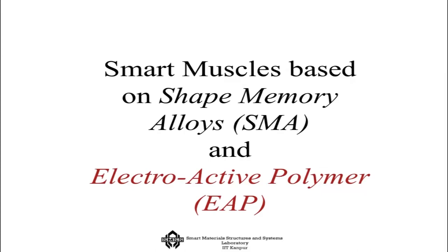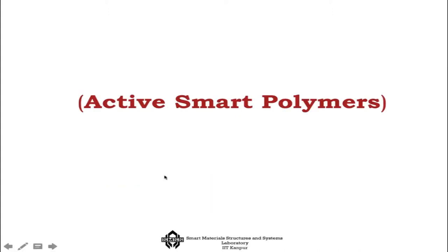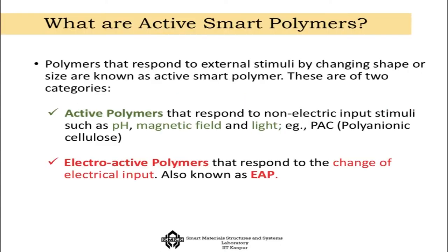Today we will talk about electroactive polymers, also abbreviated as EAP. These electroactive polymers belong to the smart materials group commonly known as active smart polymers. The polymers that respond to external stimuli by changing their shape or size are known as active smart polymers. The external stimuli could be of different types — the best way to differentiate them is whether the stimulus is electrical or non-electrical in nature.